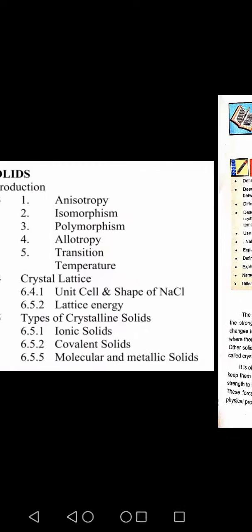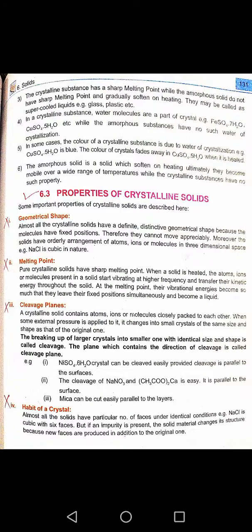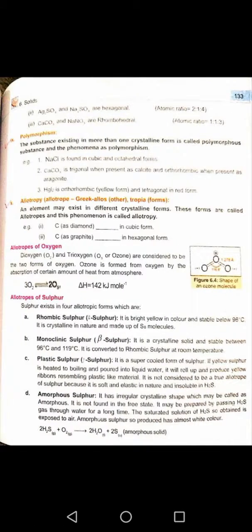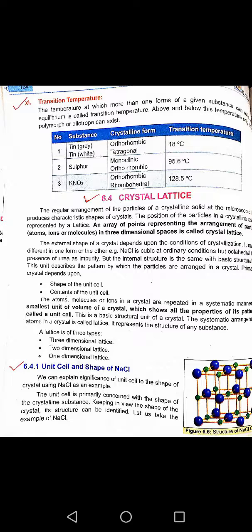Students, according to this list of reduced syllabus, from the properties of crystalline solids, just 5 properties are included: anisotropy, isomorphism, polymorphism, allotropy, and transition temperature. After this, crystal lattice is included.